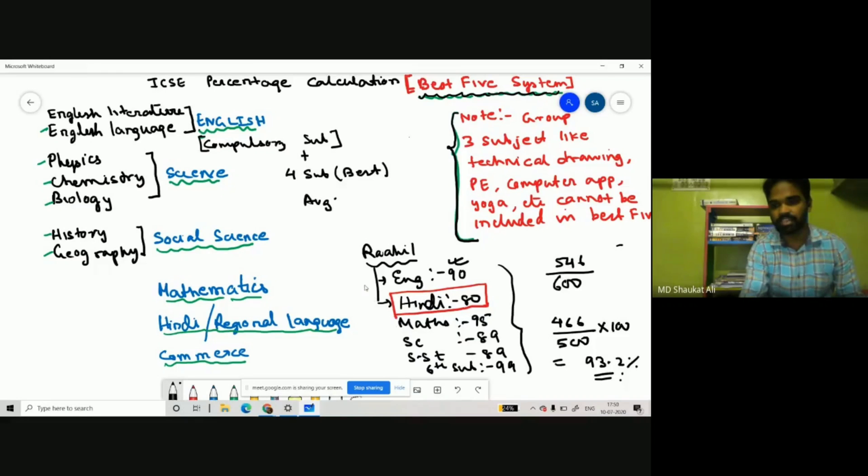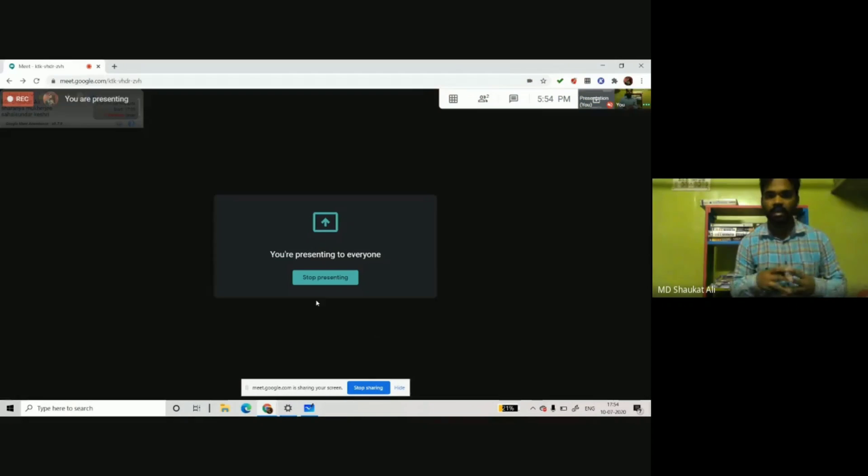In ISC, you take best of four subjects where English is included - English plus three subjects where you get good marks, where you get best marks. Add all of them and divide by four. Take care, everybody.